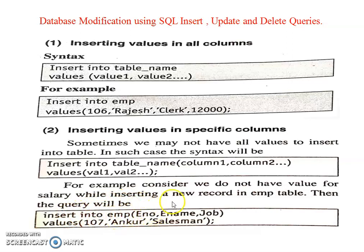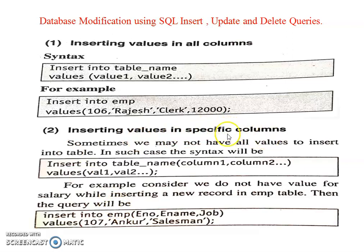Then the query is written: INSERT INTO employee (employee_number, employee_name, job) VALUES (107, 'Ankur', 'salesman'). It means only the specified column names — employee number, employee name, and job — are given values. This is inserting a value in a specific column of a table.